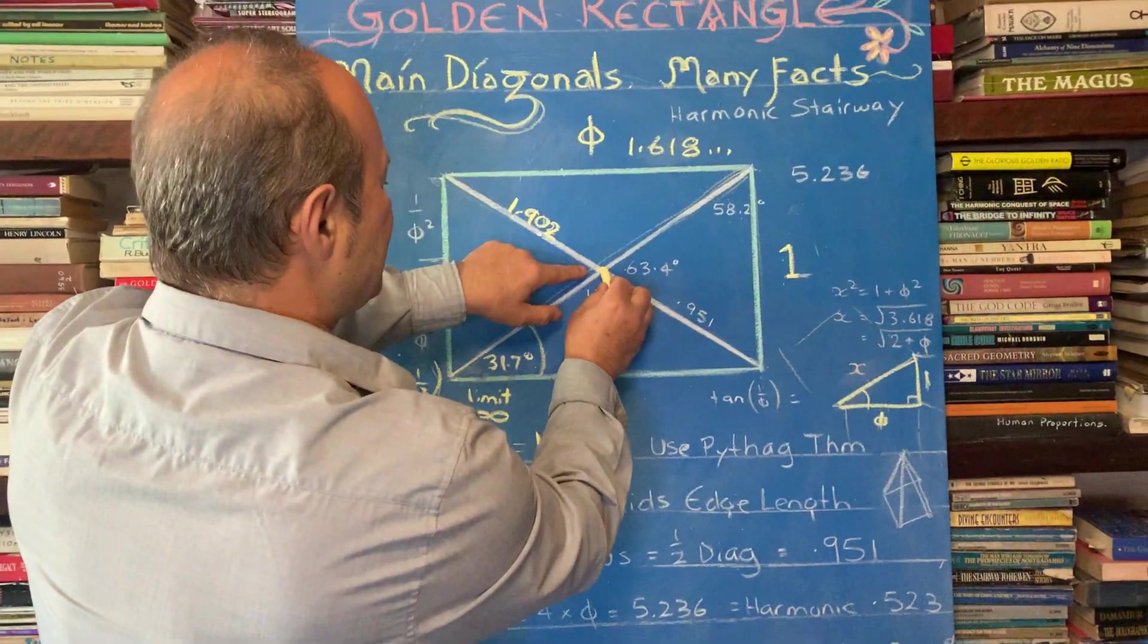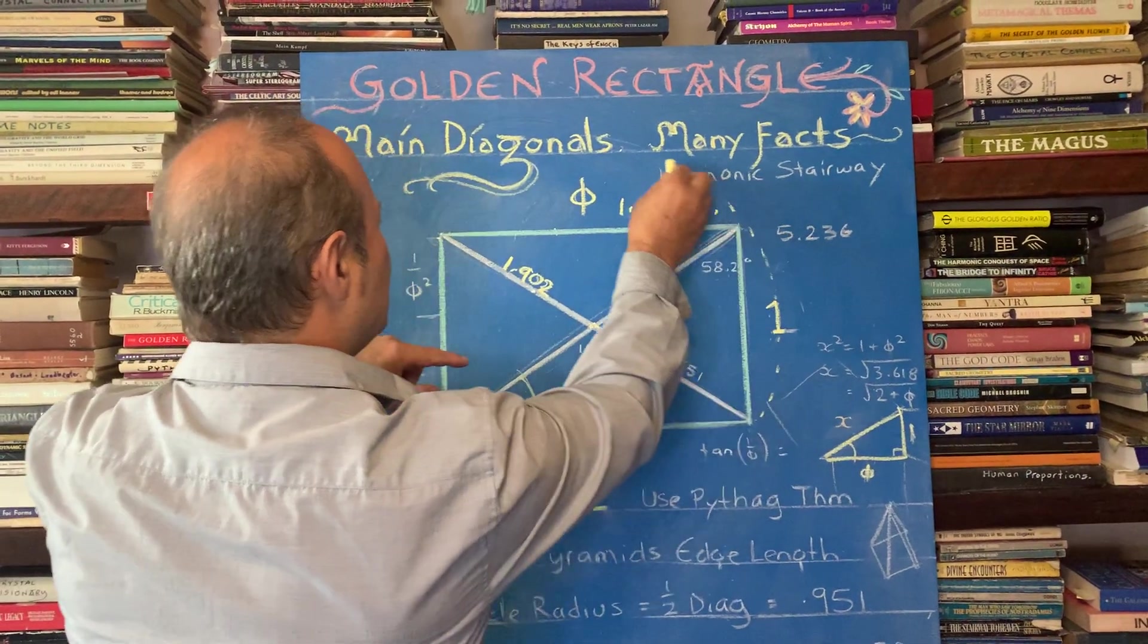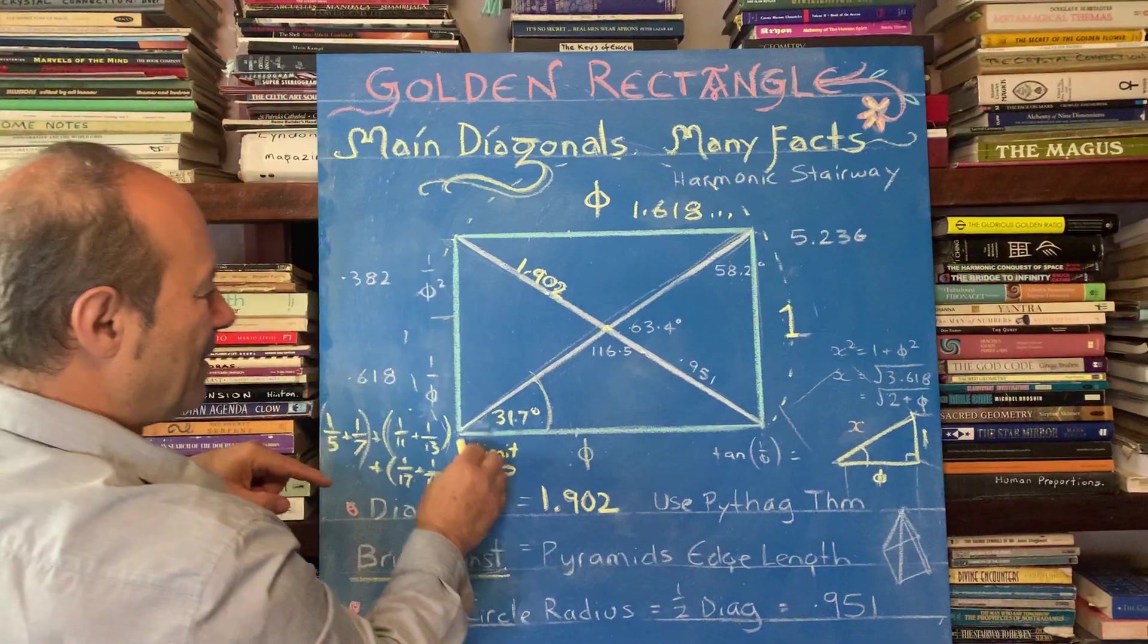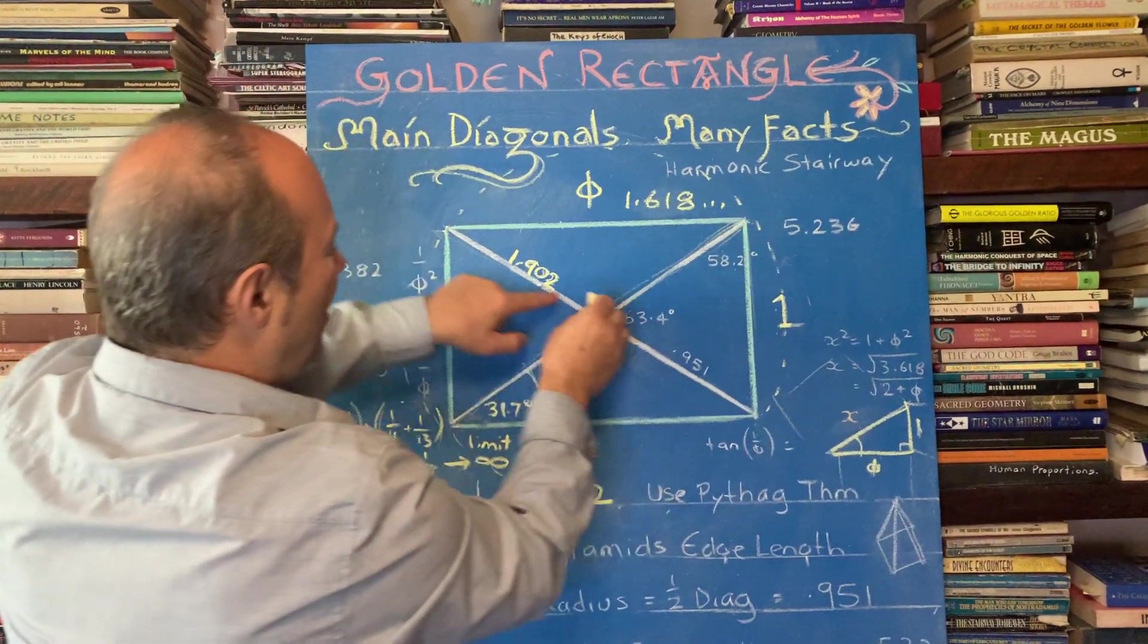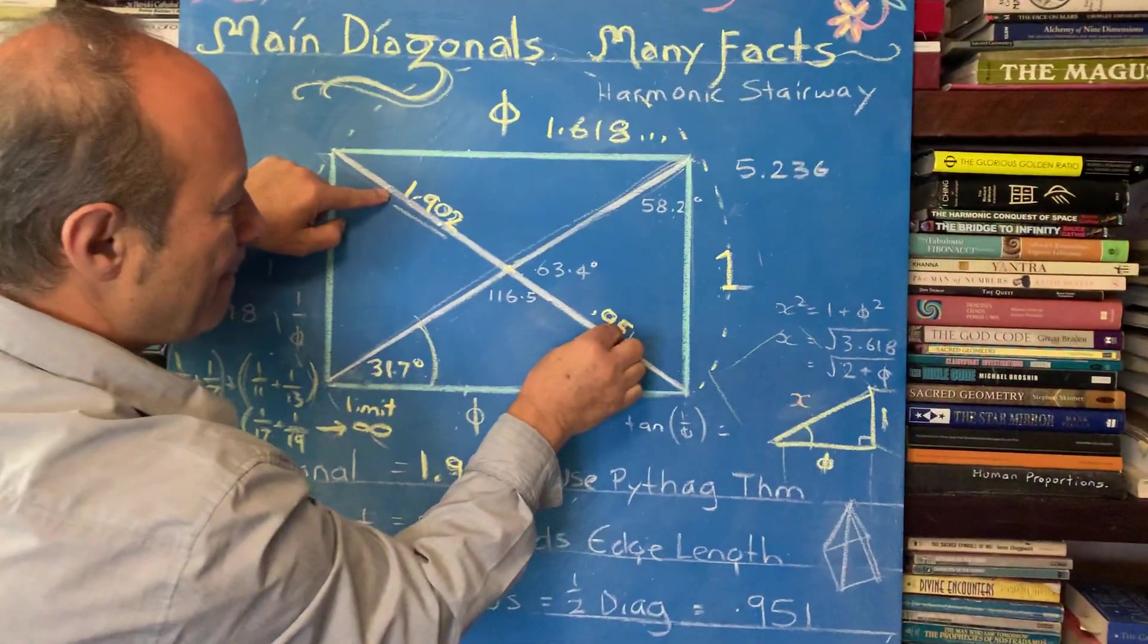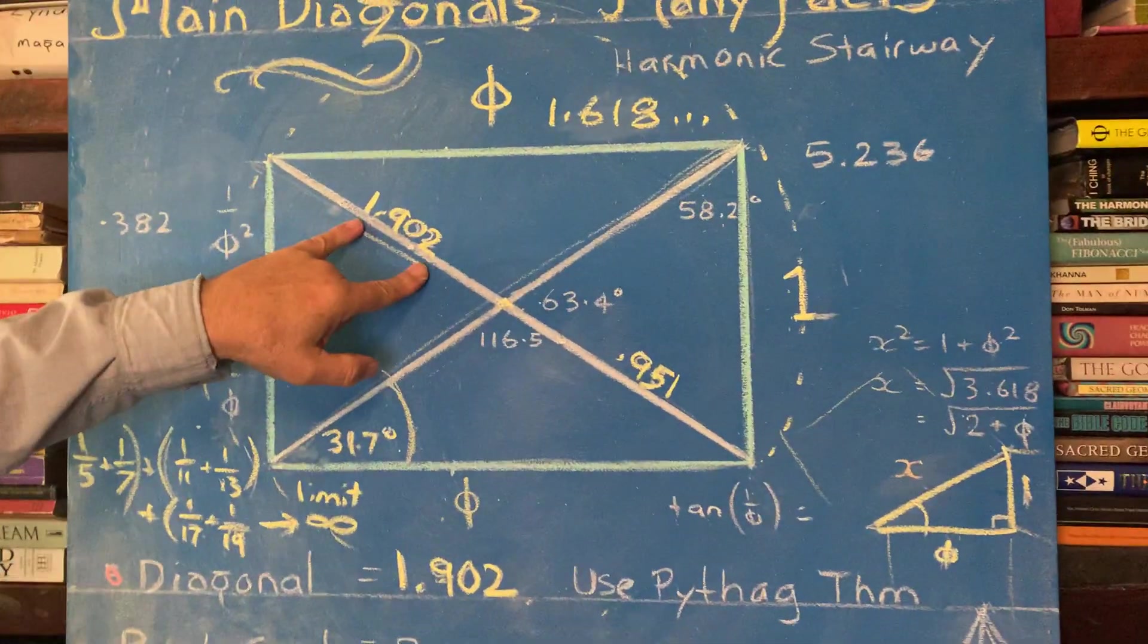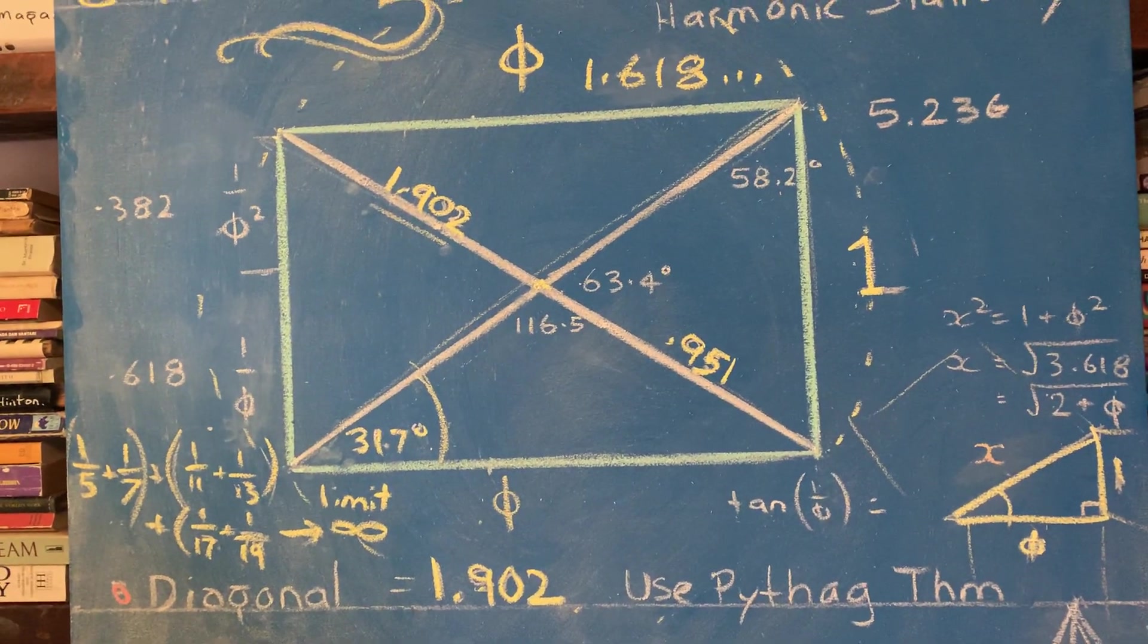And then, so what's half of 1.9 is that if we did a circum circle, if we did a circle that completely goes around this, we need to have a radius of half that distance. So that's called 0.951. So 0.951 is half of the diagonal. That's important. And then, so we've done the circum radius.